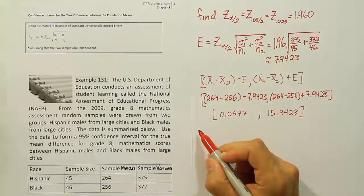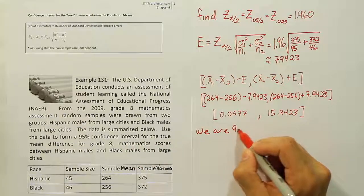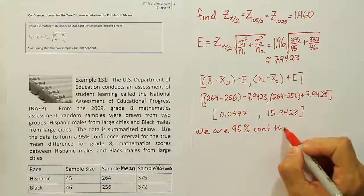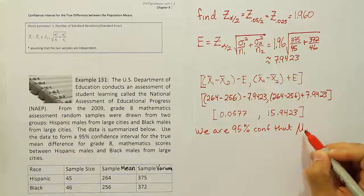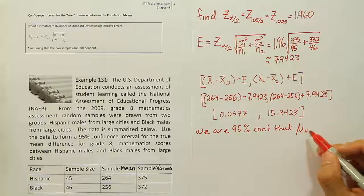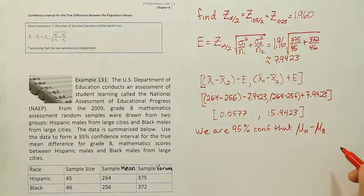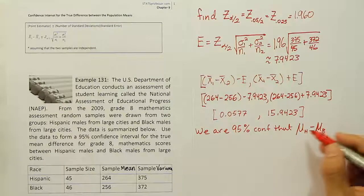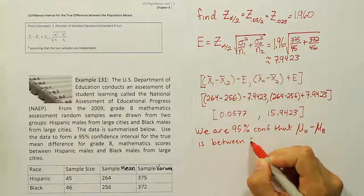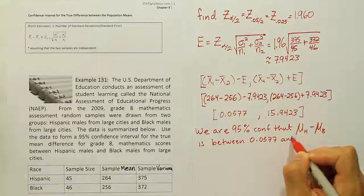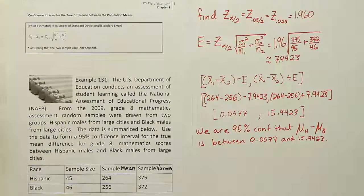Now we need to interpret it, though. So the quick thing, of course, is to always use the phrase, we are, in this case, 95% confident that... And what we're saying is in this interval is the difference. So basically the population mean difference for Hispanic males and black males. So that difference between the population means of those two groups is supposed to be inside this interval. So we are 95% confident that the mean difference between Hispanic males and black males is between 0.0577 and 15.9423. So that's our wording and our interpretation of the interval.